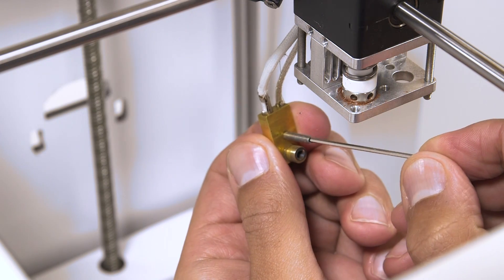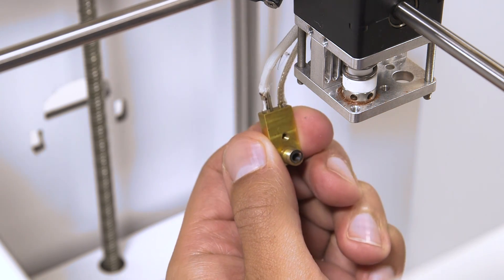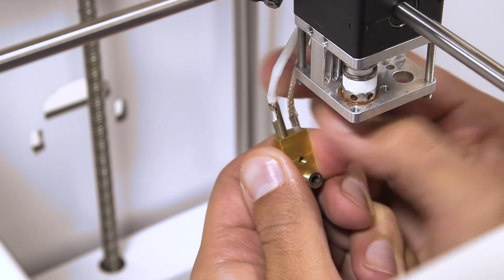Use a hex key to loosen the set screw that's attached to the top of the heater block, and then carefully pull out the heater cartridge and the temperature sensor.